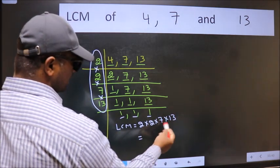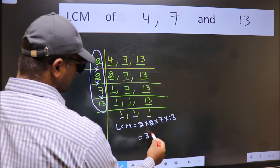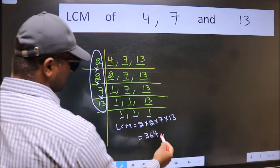When we multiply these numbers, we get 364 as our LCM.